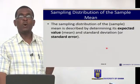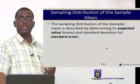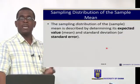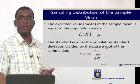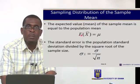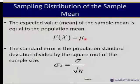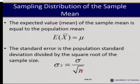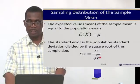For the sampling distribution of the mean, we describe it by determining its expected value (mean) and its standard deviation, which we call the standard error. The expected value of the sample mean x-bar is always equal to the population mean mu, as we saw — 25.2 equals 25.2. Its standard error, sigma-x-bar, is equal to the population standard deviation divided by the square root of the sample size, because we expect smaller variation in the sample means compared to individual values in the population.